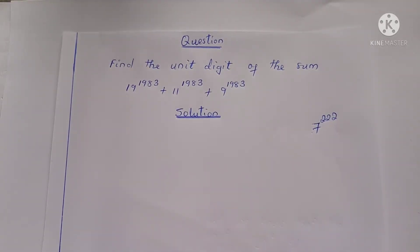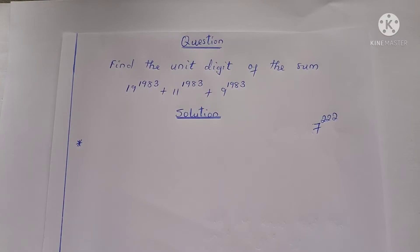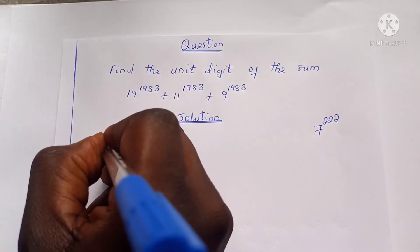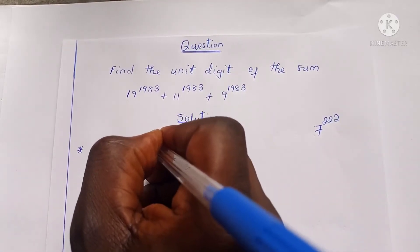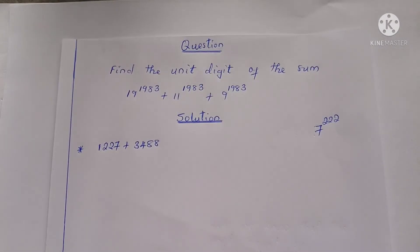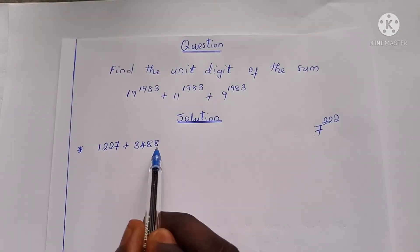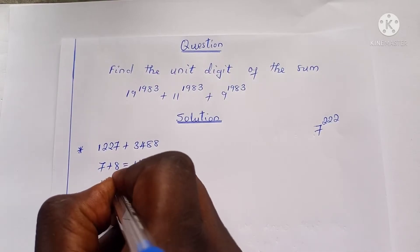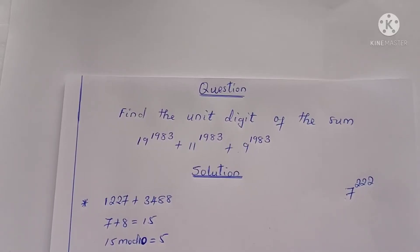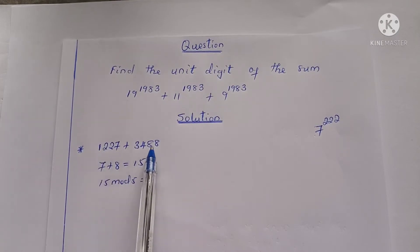Before doing this, let's note the following points. The first point is that the unit digit of the sum of two or more positive integers is the sum of the unit digits mod 10. For example, the unit digit of 1,227 plus 3,488 is simply the unit digit of 8 plus 7. We know 7 plus 8 equals 15, and 15 mod 10 equals 5. Therefore, the unit digit of this sum is 5.